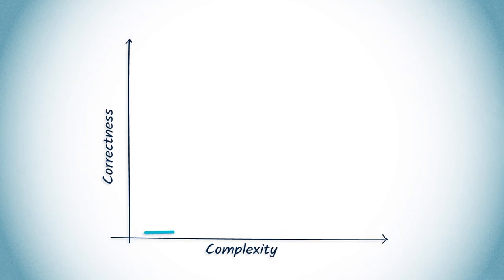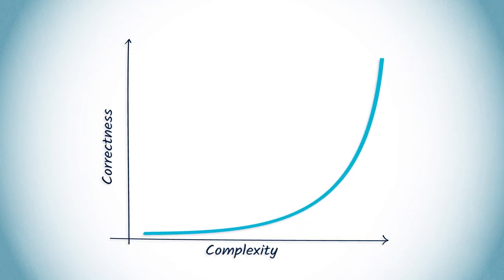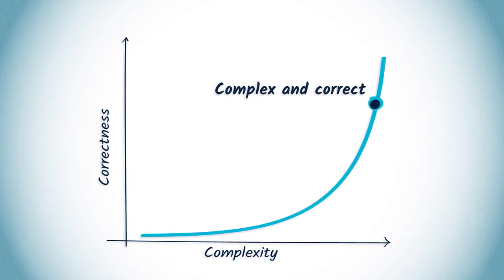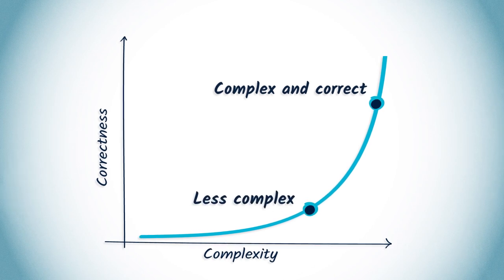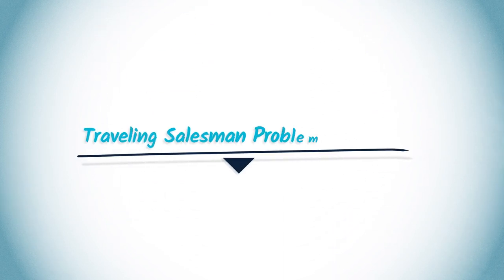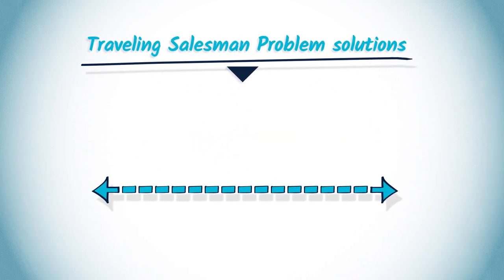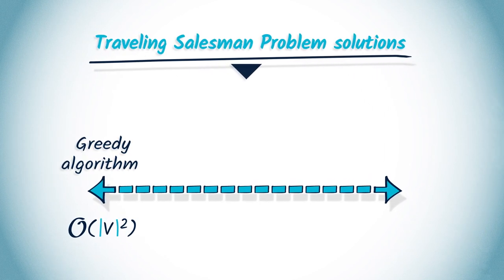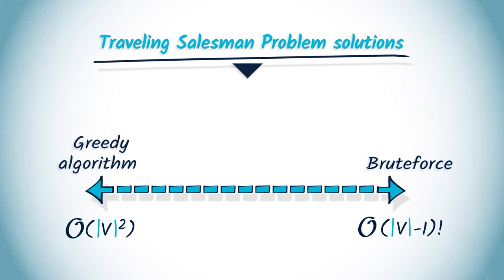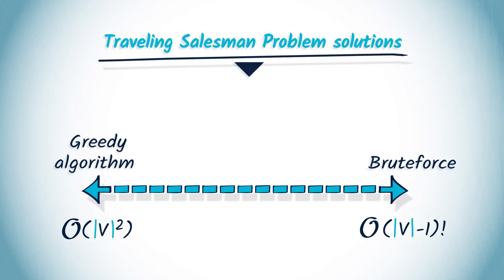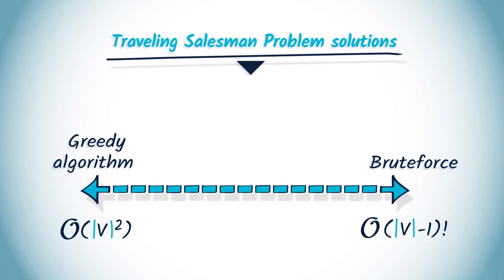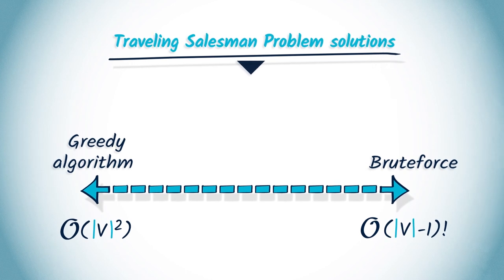What we know is that the more complexity we have to deal with, the better the solution should be in terms of correctness. In the worst case, we can always rely on a less complex solution. Taking the TSP as an example, there are many intermediate steps between the greedy algorithm — which always targets the next closest city — and the brute force approach, which exhaustively examines all possible paths. Finding an intermediate solution between these two extremes should only be considered if it actually provides improvements in complexity.